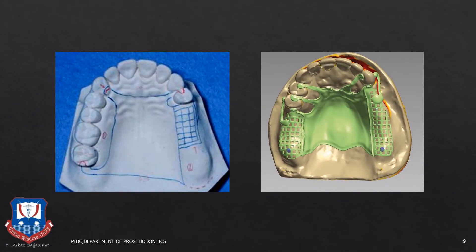The RPD designing can be done analog by designing it on the model using different color pencils. Nowadays we have exocad and other 3D designing software using which a soft copy or a soft scan of the design can be produced on a digital cast, which is then sent as an STL file to the laboratory, which can then mill it using titanium milling machines, or it can be created using 3D printing or DMLS, which is also known as Direct Metal Laser Sintering.